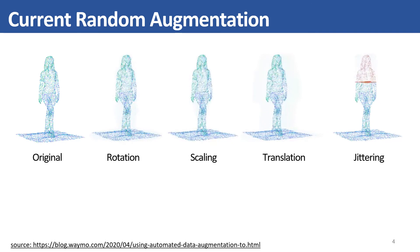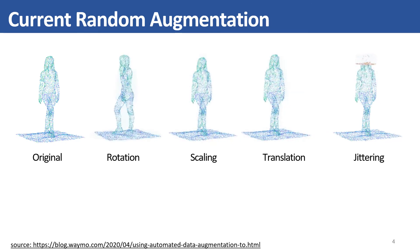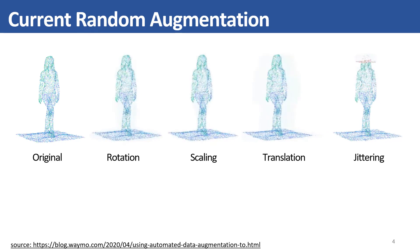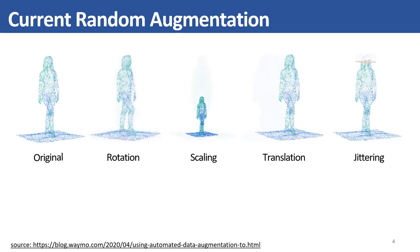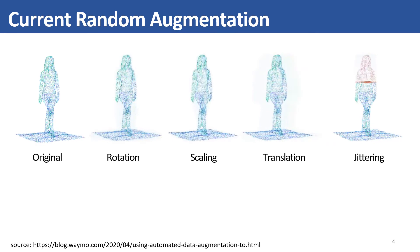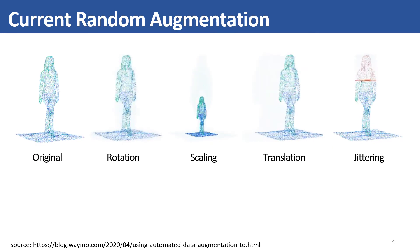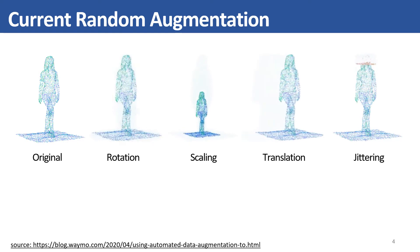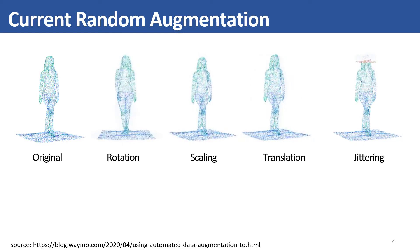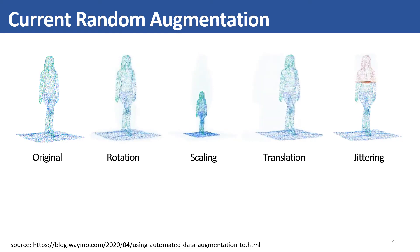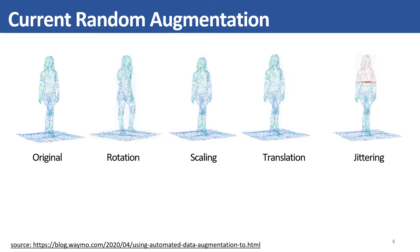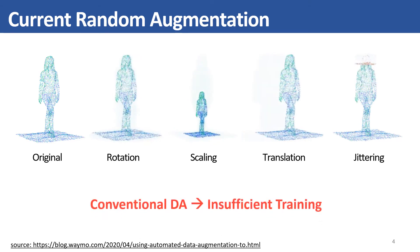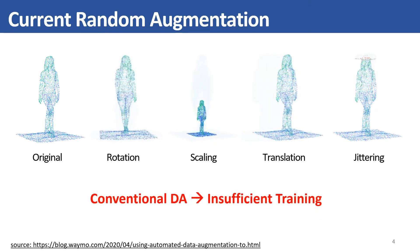For 3D point clouds, we often adopt a random-based data augmentation strategy. Given an original training sample, we often randomly apply rotation, scaling, translation, and jittering with Gaussian noise.